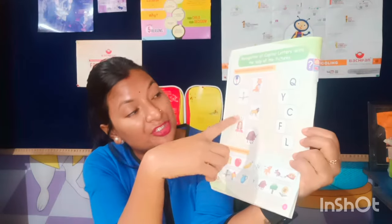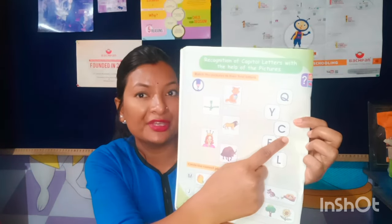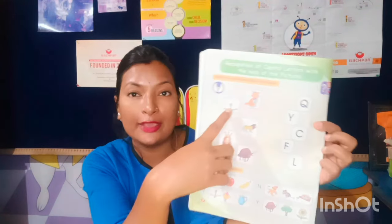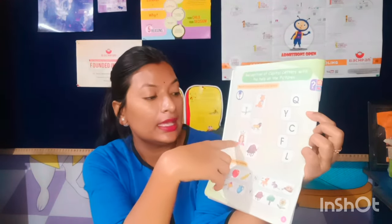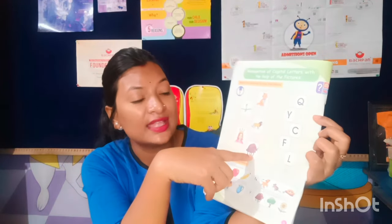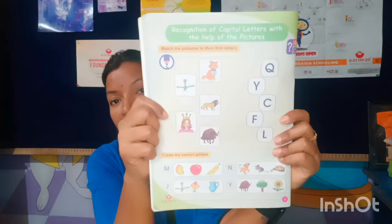Moving to topic number three: recognition of capital letters with the help of pictures. Here we match letters with pictures using the initial letter of each picture's name. The first one is C for cat — match with C. L for lion — match with L. F for fan — match with F. Q for queen — match with Q. Y for yak — match with Y. This way we do matching worksheets during class so children can identify all the letters and learn phonics words.